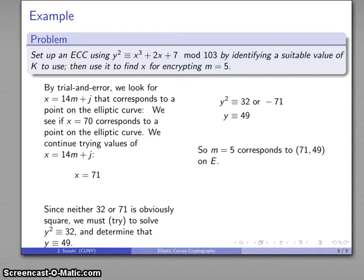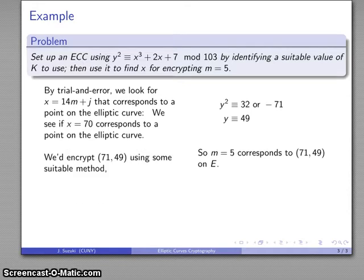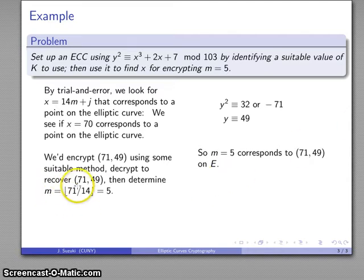I'll encrypt this point using some suitable method. At the other end, someone decrypts to recover the point (71, 49). They find 71, the x-coordinate, divided by 14 (the k value), and take the greatest integer less than the quotient, which is 5. That's the decrypted message.